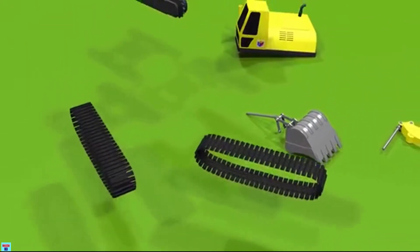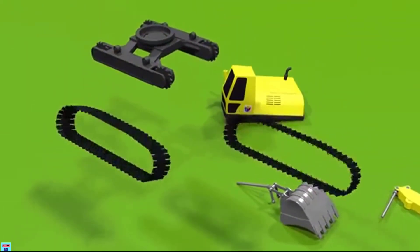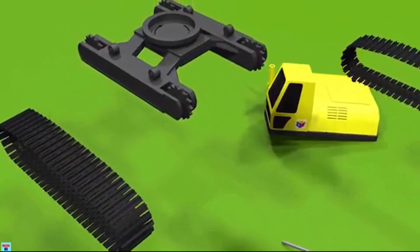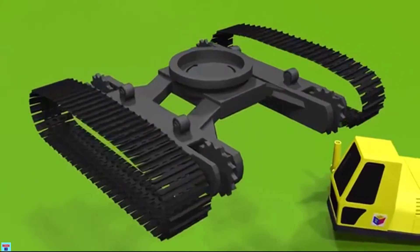These are tracks. Tracks let the excavator travel over uneven ground. Now we are going to put both of the tracks on the sprockets.